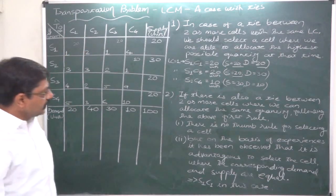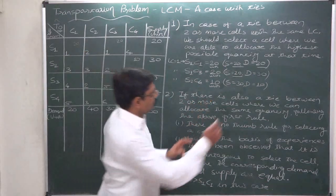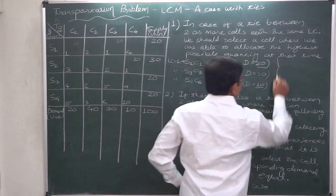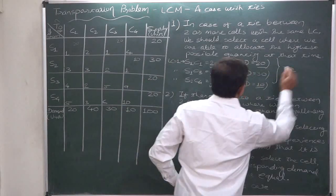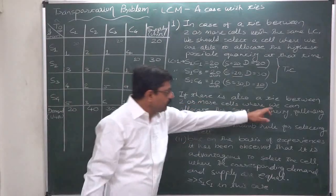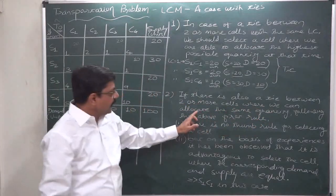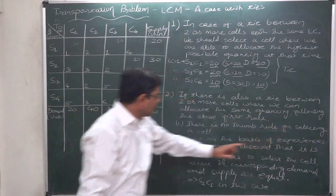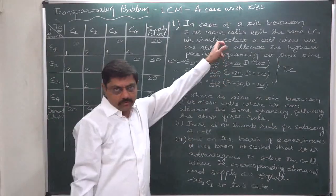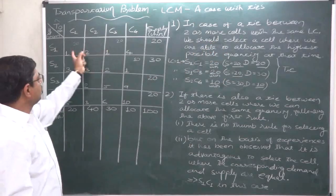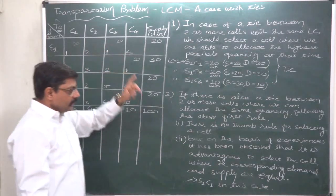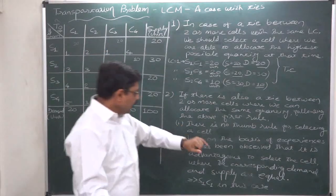So if there is also a tie between two or more cells where we can allocate the same quantity — following the first rule — and both have the same least cost and the same allocatable quantity, there is no thumb rule. However, based on experience, a guideline can be applied.